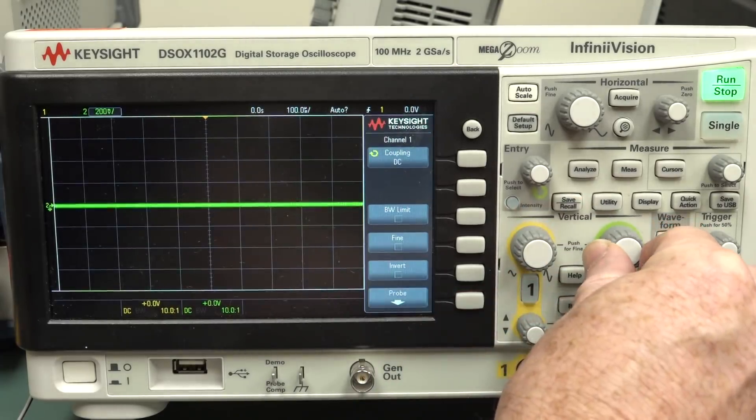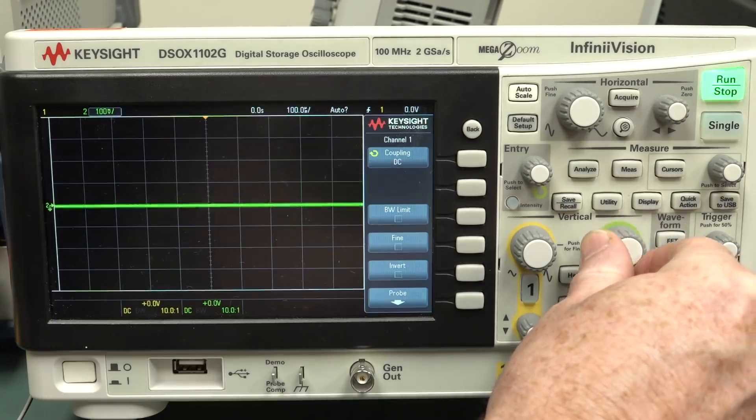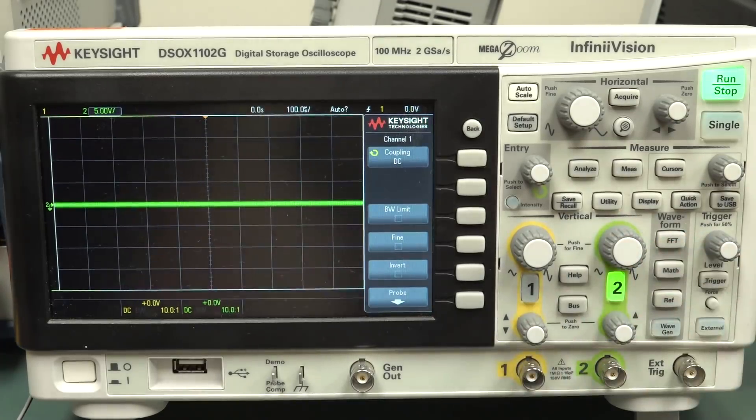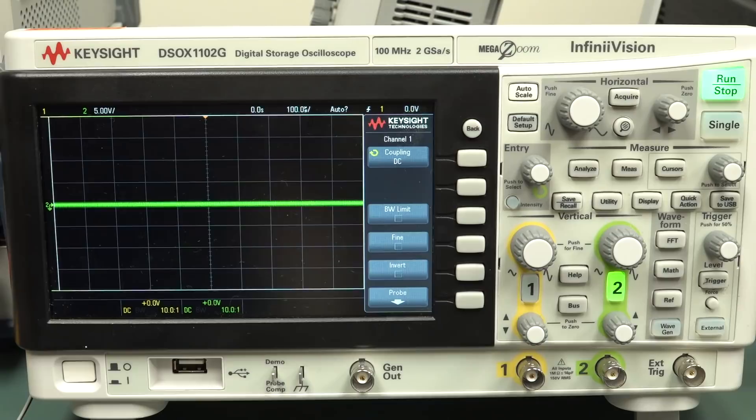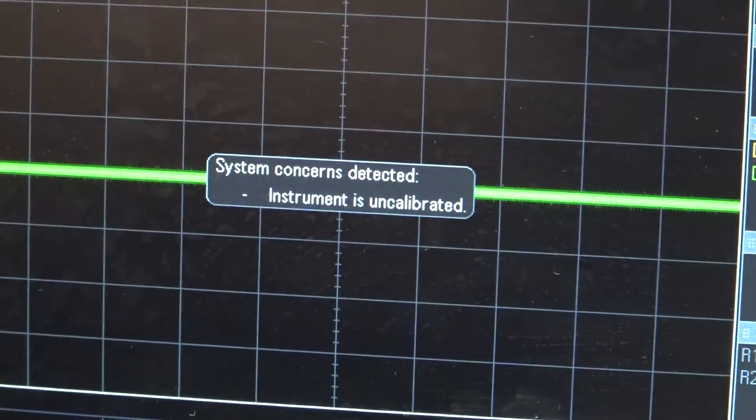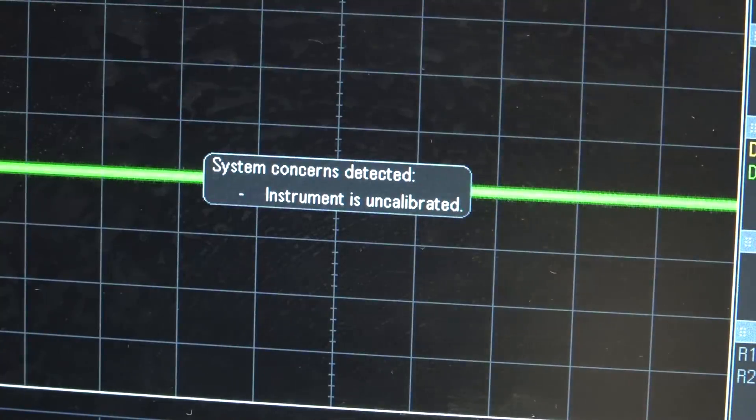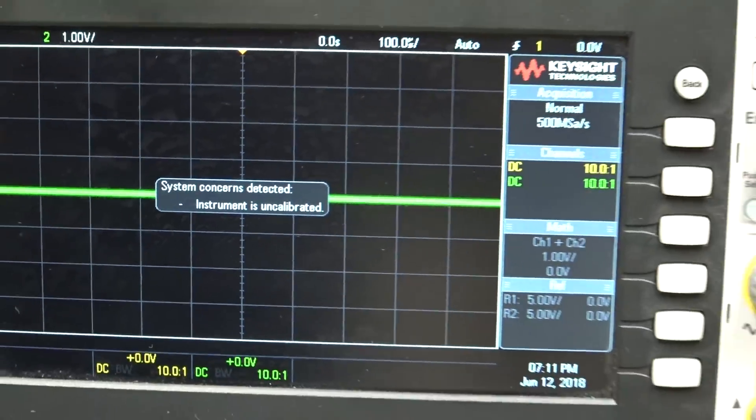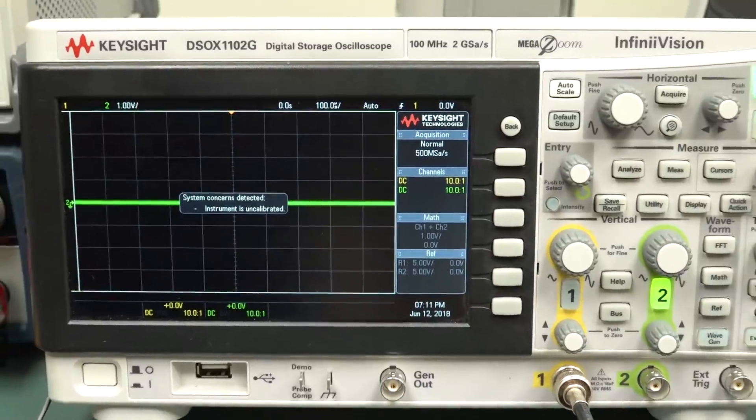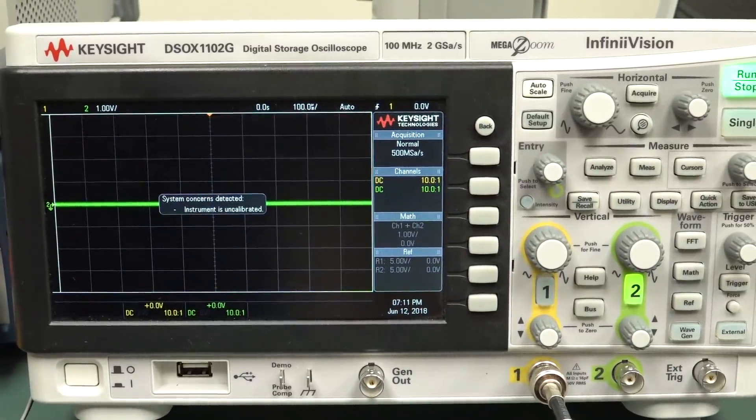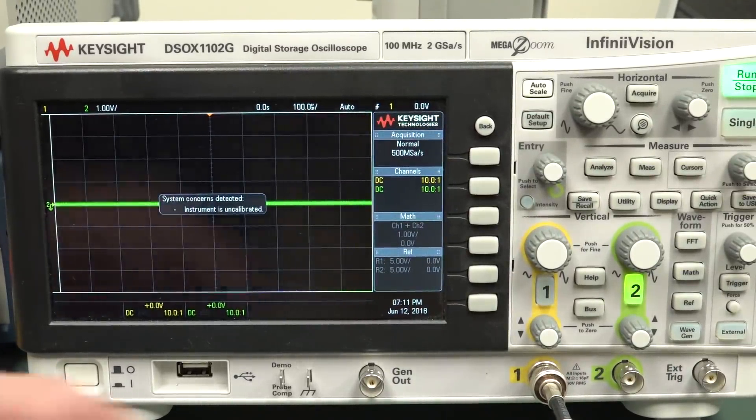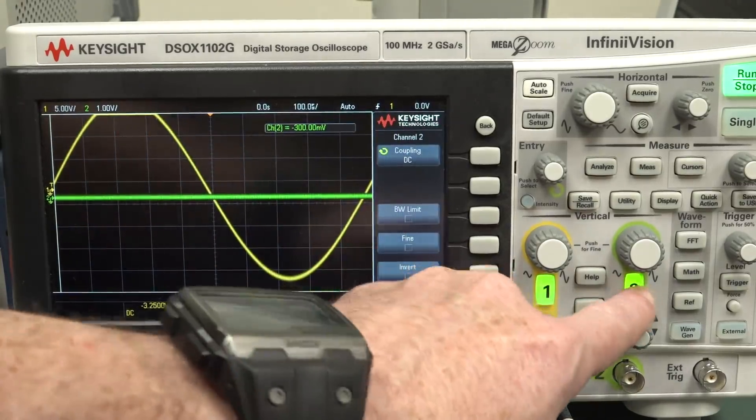But the other one has a real issue. So I'm not sure if there's a hardware fail. I'll try the user calibration again. Whoa, I just repowered it up. System concerns detected. Instrument is uncalibrated. Yeah, because it failed the calibration. Like the user cow. Okay. Wonderful.